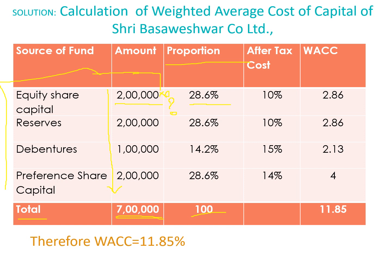Like that, you have to do for the next components also. For reserves, the amount is the same (2 lakh), so the proportion will also be 28.6%. For debentures of 1 lakh, the proportion is 1 lakh into 100 divided by 7 lakh, which comes to 14.2%. For preference share capital, the amount is again 2 lakh, so the proportion will also be 28.6%.